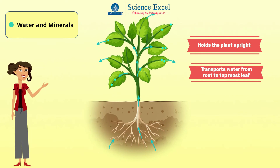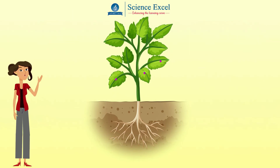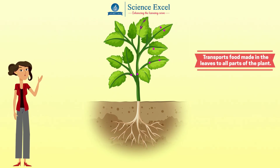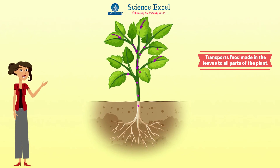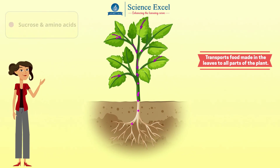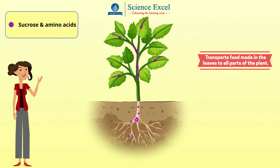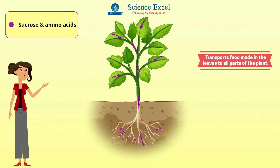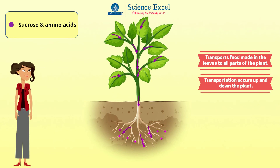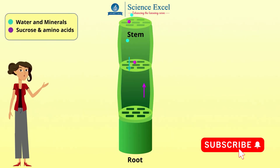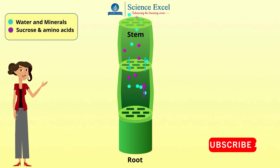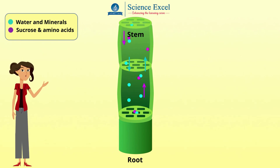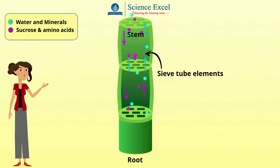Now let us understand what phloem is. Phloem is the living tissue that transports food made in the leaves — in the form of sugar sucrose and amino acids — to all the other parts of the plant. This transportation takes place up and down the plant. Phloem tubes are made up of many cells joined end to end. However, their end walls have not completely broken down; instead, they form sieve tube elements.